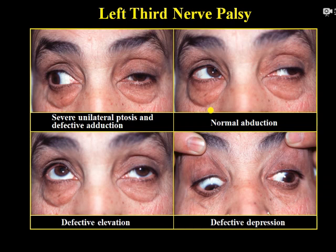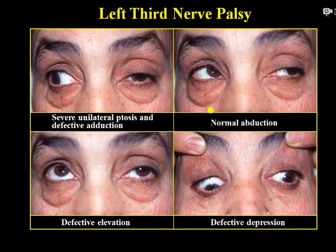One important clinical condition is third nerve palsy. The third nerve supplies both intraocular and extraocular structures — the pupil, the extraocular muscles, and the levator palpebrae superioris. So if there is a defect in the third nerve, all these structures are affected. In a typical case of left third nerve palsy, there will be ptosis of the affected side, a paralytic squint, the eye will be in a down-and-out position, and the pupil may be dilated.